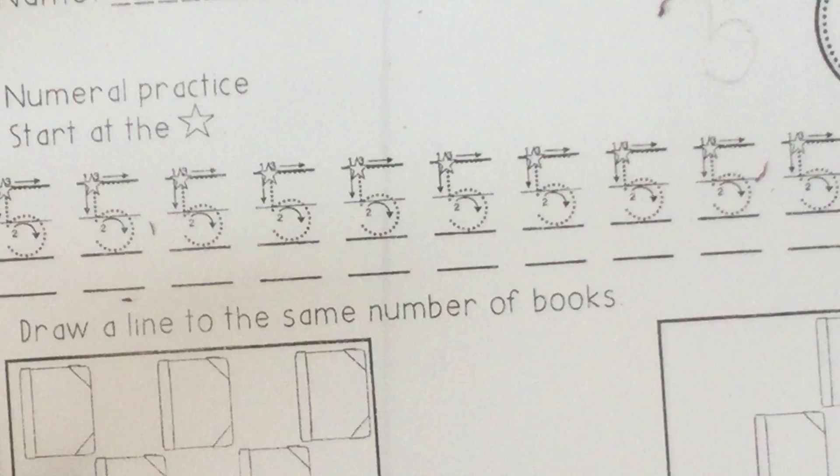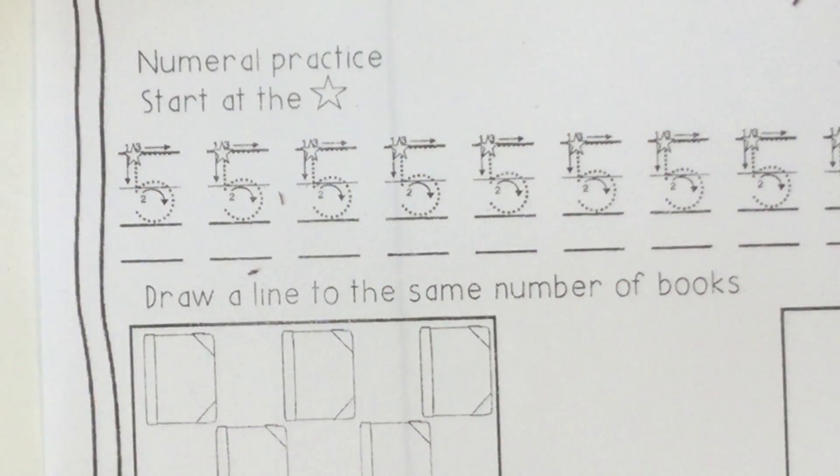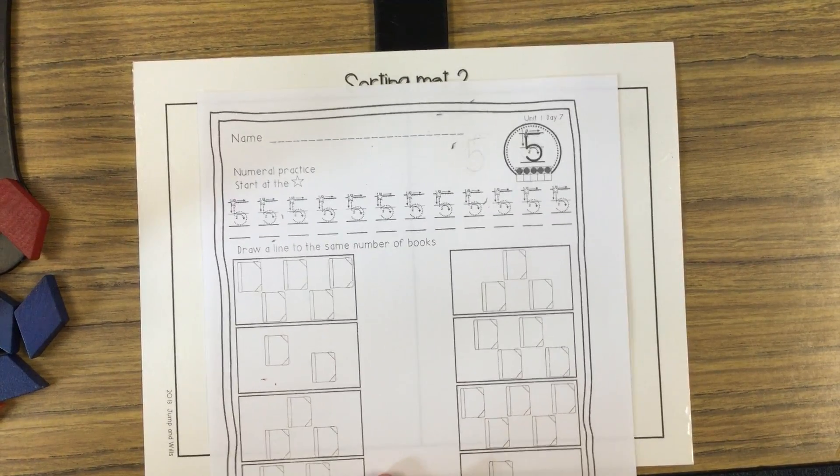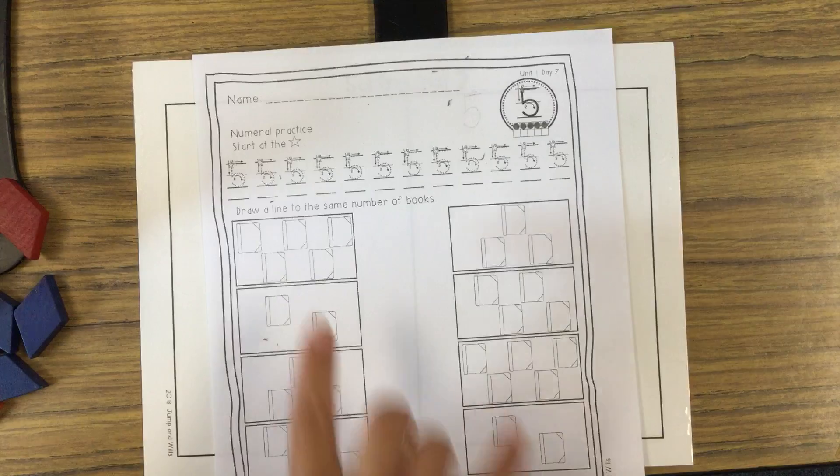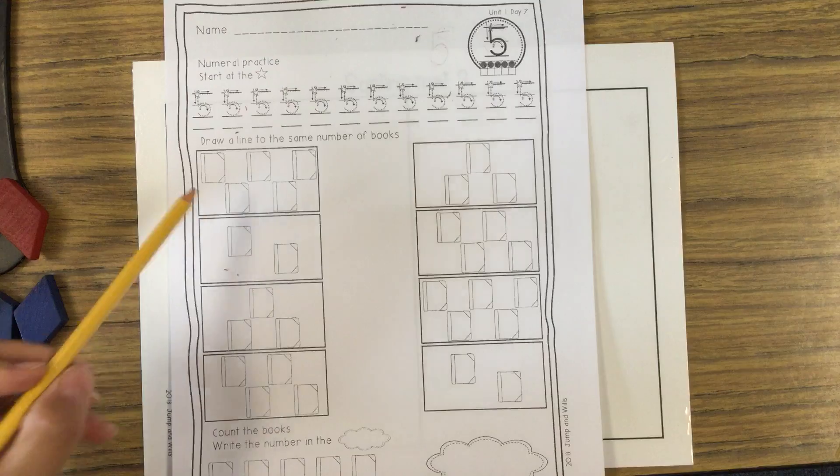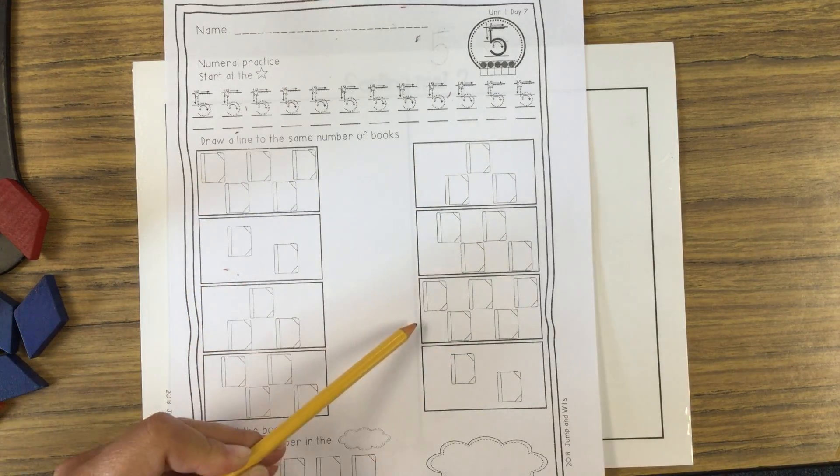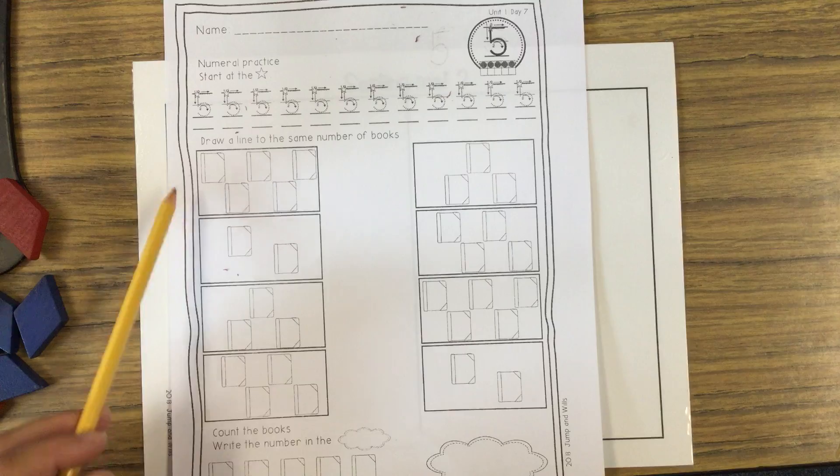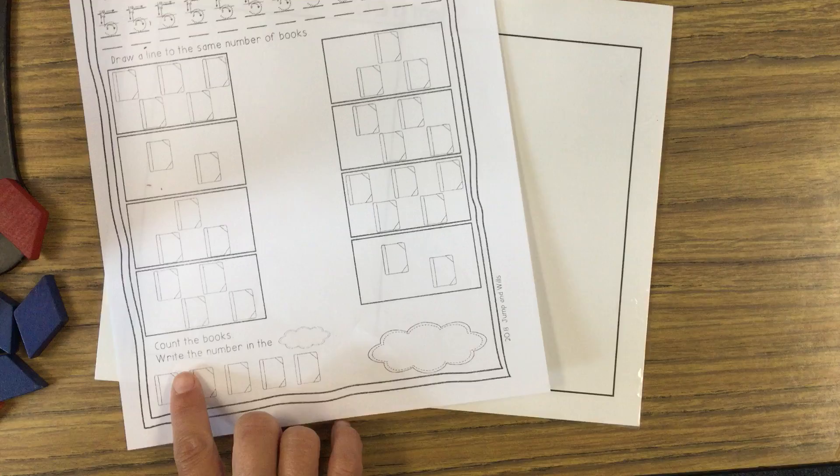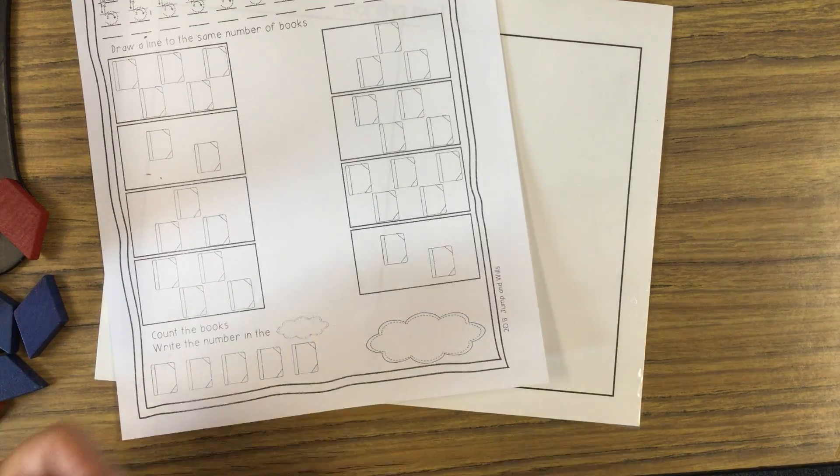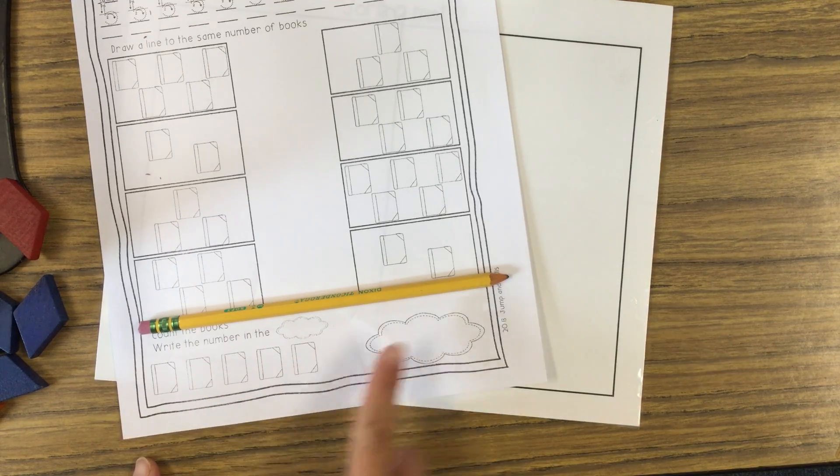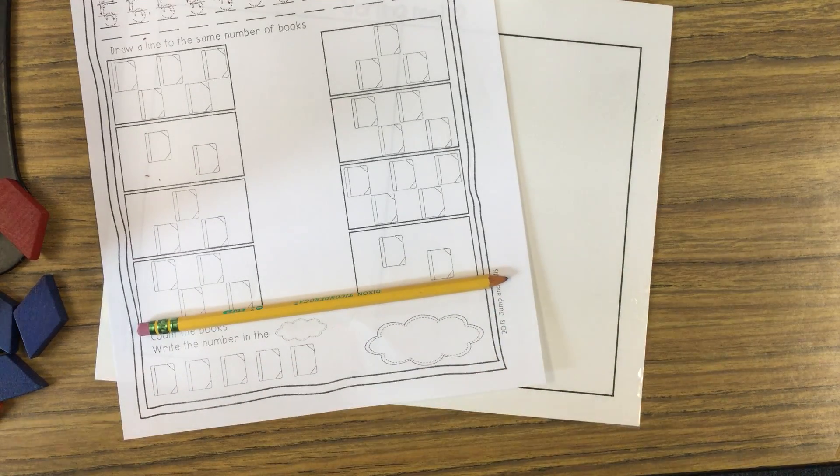And so then you trace number five all the way across to practice that and have nice muscle memory with your number five. Then it says draw a line to the same number of books. Does that sound familiar? Yeah. We've been doing this for days. So you count the books and then match it to the same number of books on the other side. And whatever you color this side, it needs to be colored on that side. And then down below, count the books. We write the number in the cloud. So you're just talking about these books down below. So count them and then write how many in the cloud. And that's it.